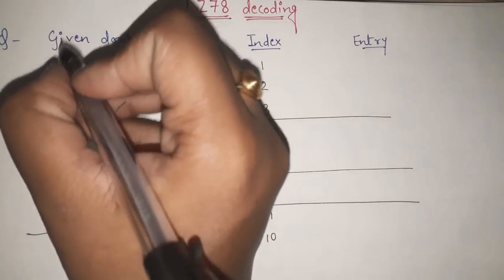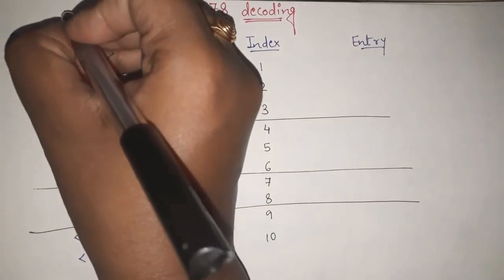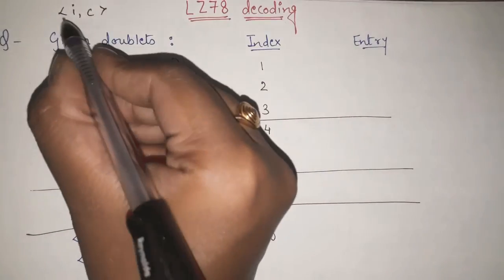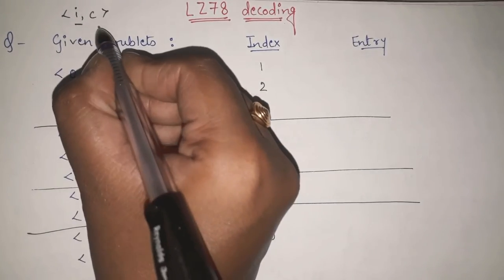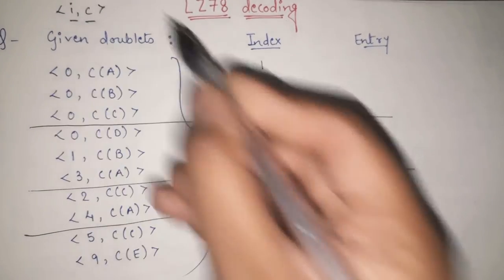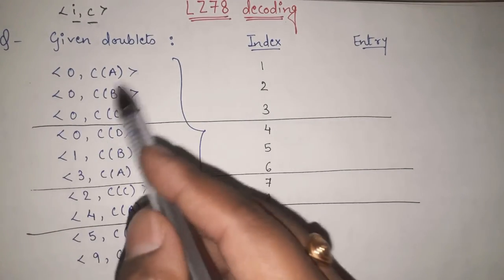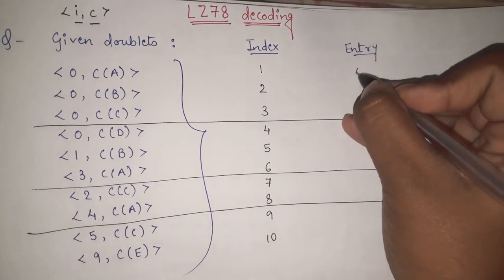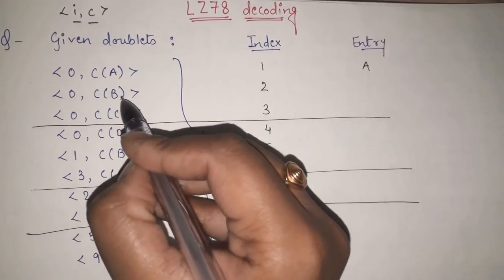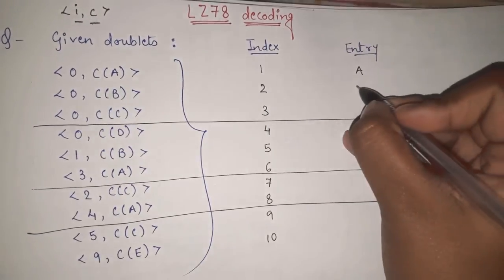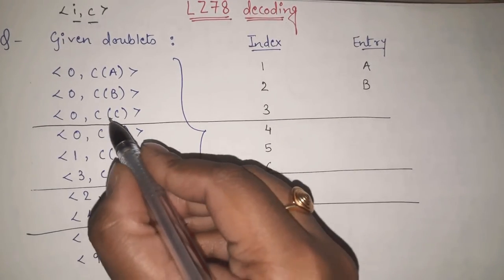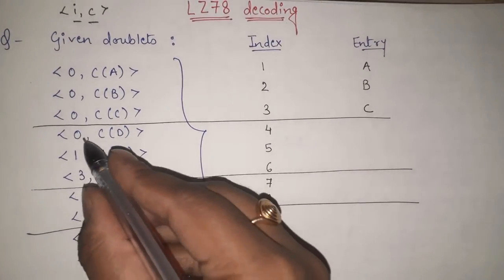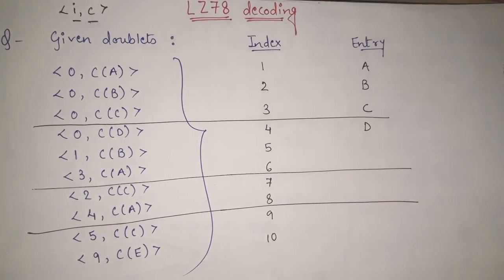So the first doublet — the doublet consists of I and C, that means the first one is my index and the second one is my codeword. So here index is zero, no issues, only codeword of A, so the entry is A. Here also zero, codeword of B, so the entry will be B. Zero codeword of C, so the entry will be C. Zero codeword of D, entry will be D.